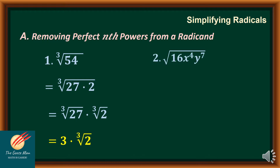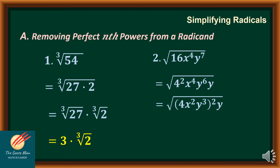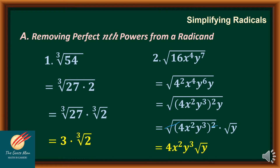Let's move on to the second example. I have the square root of 16x to the 4th power y to the 7th. I'll factor 16 as 4 squared, then expand y to the 7th as y to the 6th times y. I'll factor out the common factor of the exponents 2, 4, and 6, which is 2. So I have the square root of (4x²y³)² times y. Separating, the square root of (4x²y³)² times the square root of y gives the final answer 4x²y³ times the square root of y.